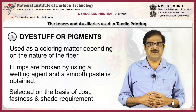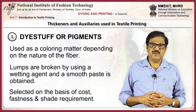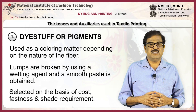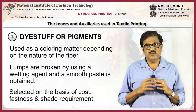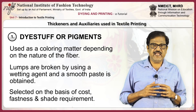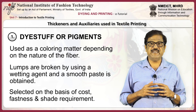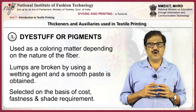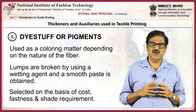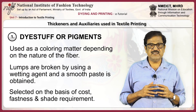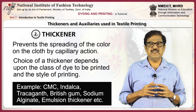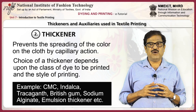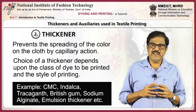Dye stuff or pigment is used as coloring matter depending on the nature of the fiber. Lumps are broken using a wetting agent and a smooth paste is obtained. Dye stuff or pigment is selected on the basis of cost, fastness properties and requirement of shade. Thickeners and auxiliaries used in textile printing prevent the spreading of color on the cloth by capillary action.